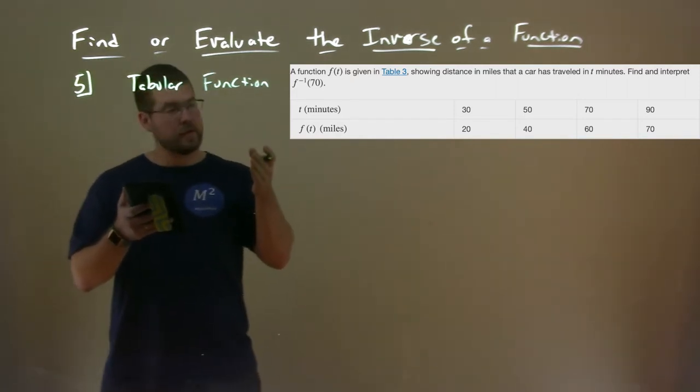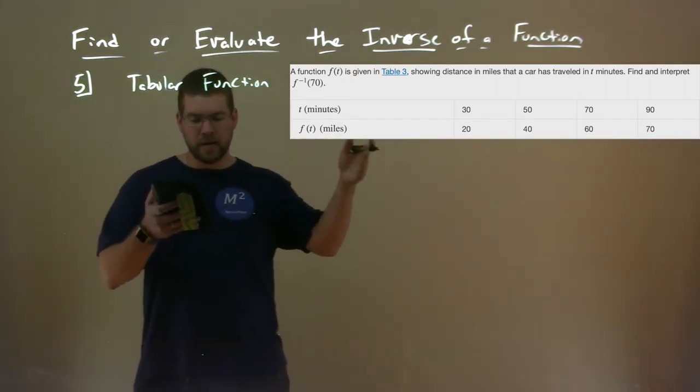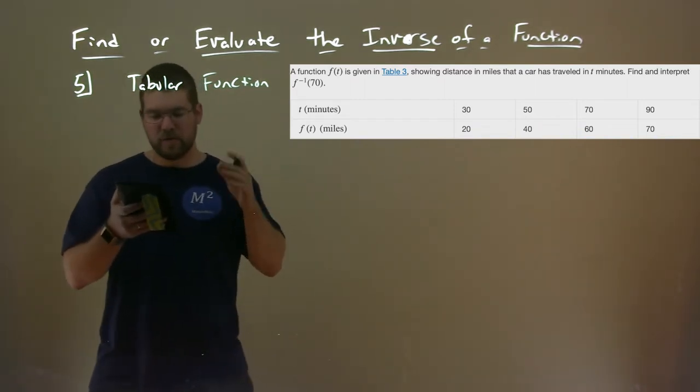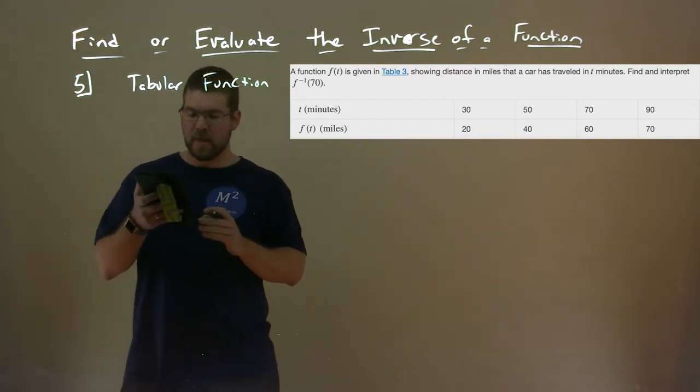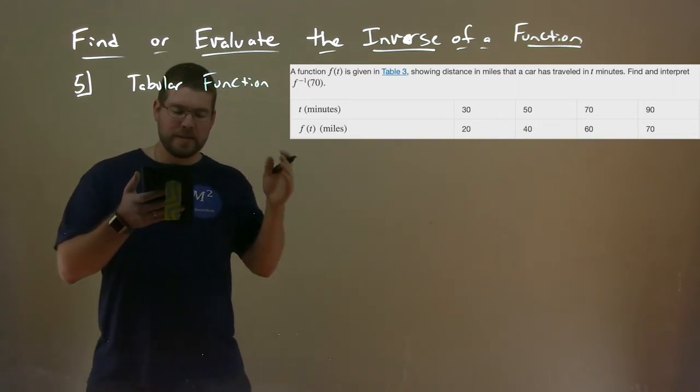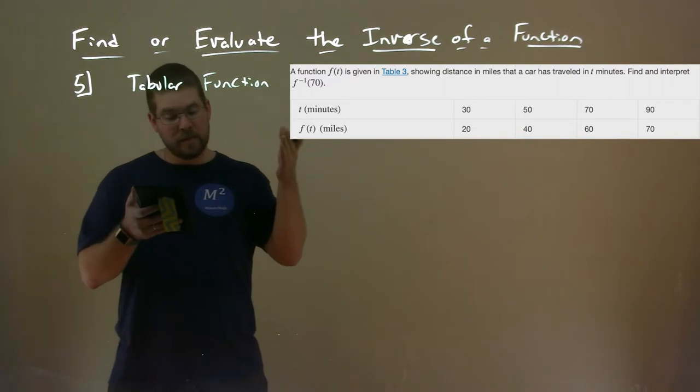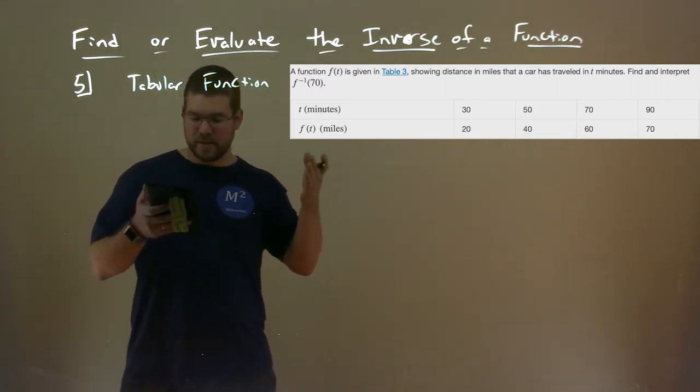We have t equals minutes, and that's 30, 50, 70, 90. And f(t), the function itself miles, function of t is 20, 40, 60, 70. So what we can see here, let's say it's 70 minutes of driving, we'll hit 60 miles.